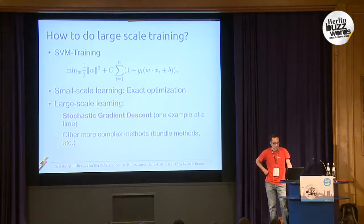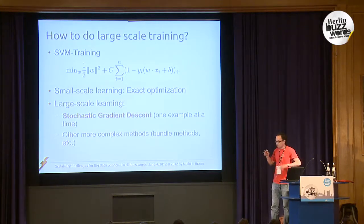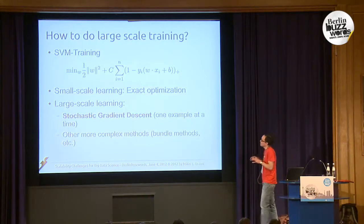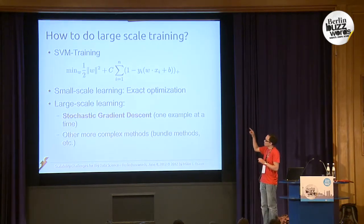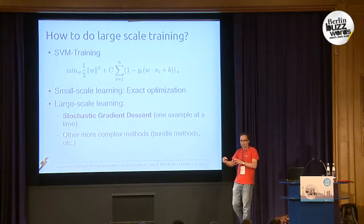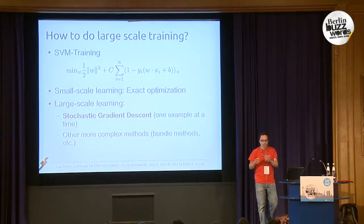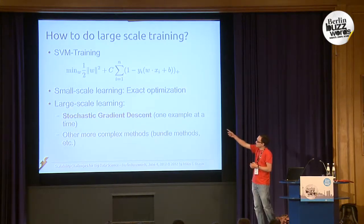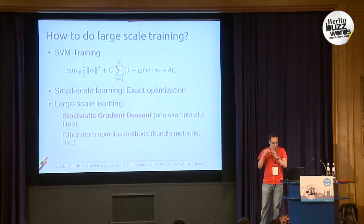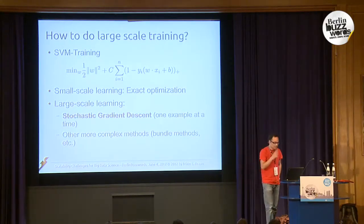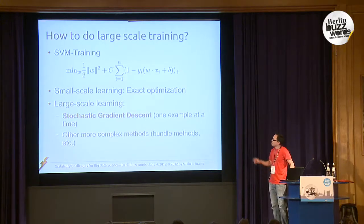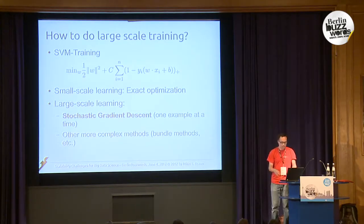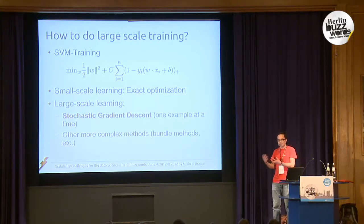This is the only formula in the talk. For training an SVM, you want to minimize a formula where the right-hand side counts all the mistakes made on your training data — the w's are the weights you want to learn — you compute how often you predict the wrong label, plus the norm of w to bound the complexity and avoid overfitting. Originally people used classical optimization theory to minimize this, but those algorithms are quadratic or cubic in the number of examples, making them very slow.